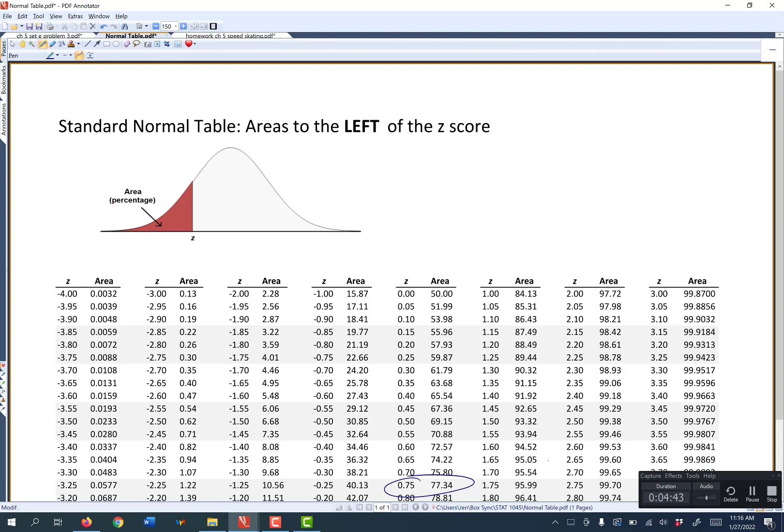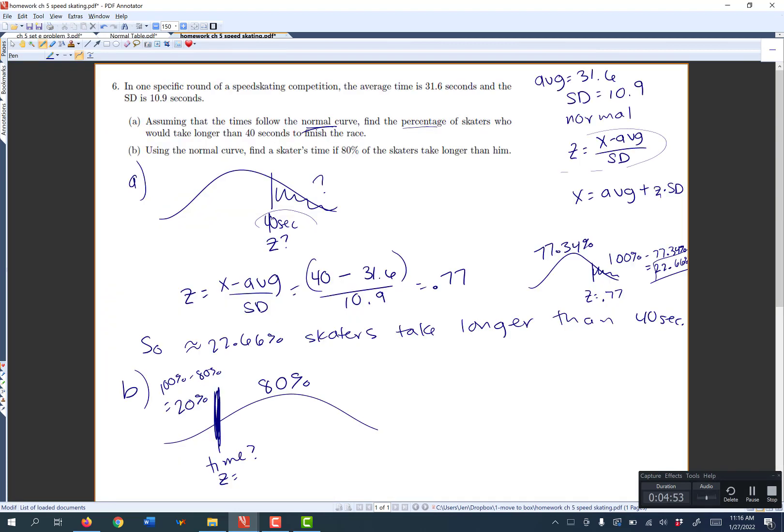So I'm going to go to my normal table and I'm going to look up 20% area to the left. So the areas in the second column, I'm looking for 20%. It looks like the closest one here is this 19.77 for an area. So I'm going to say z equals negative 0.85.